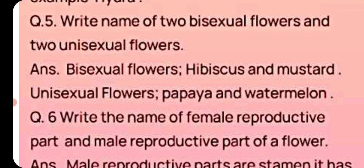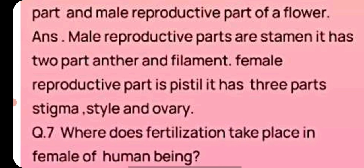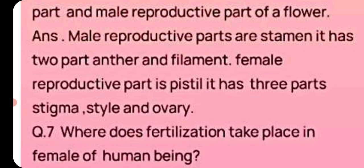Bisexual means having both male and female reproductive parts. The male reproductive part of a flower is the stamen, which has two parts: anther and filament. The female reproductive part is the pistil, which has three parts: stigma, style, and ovary.